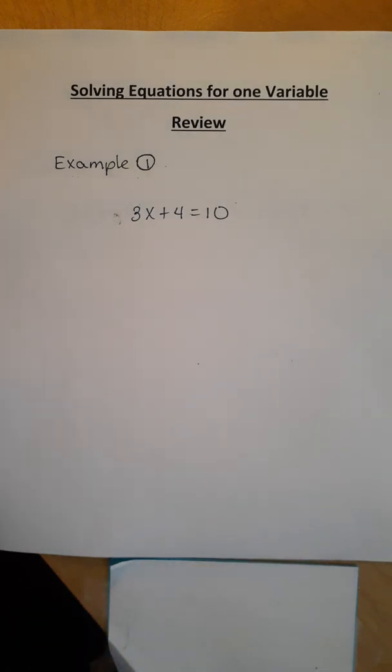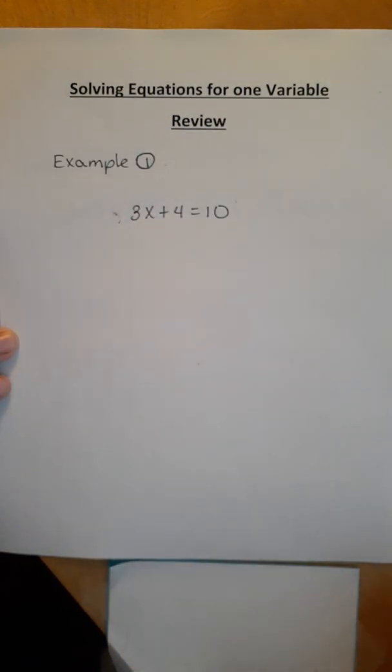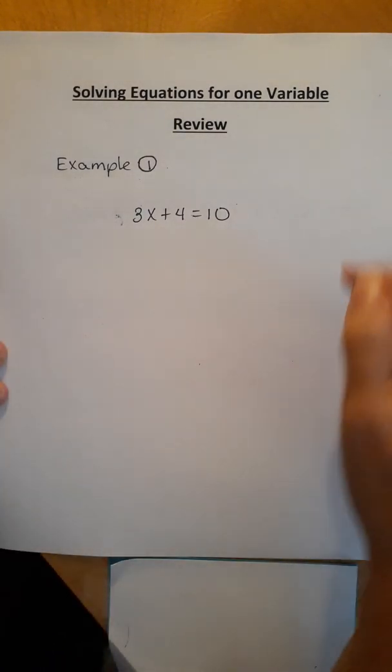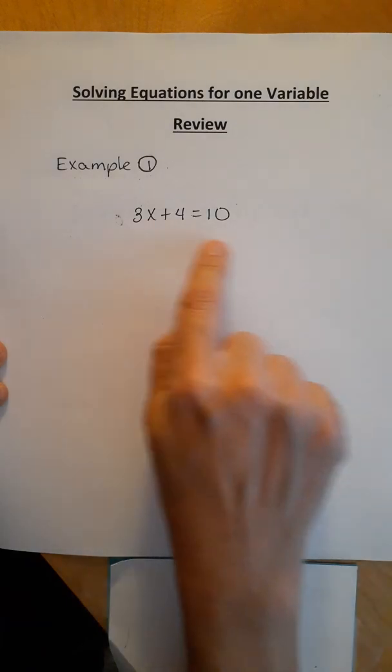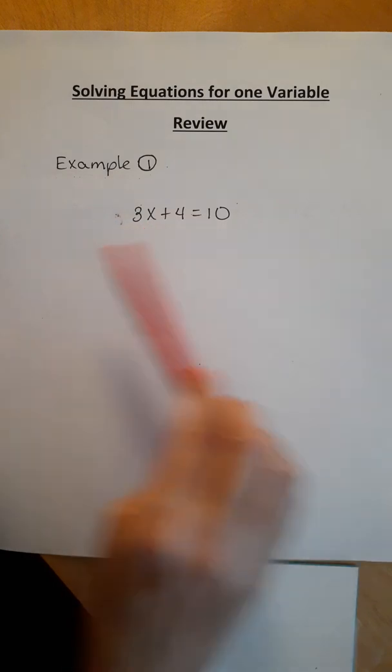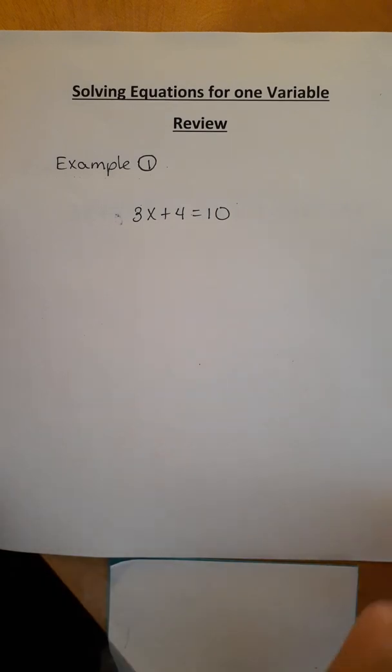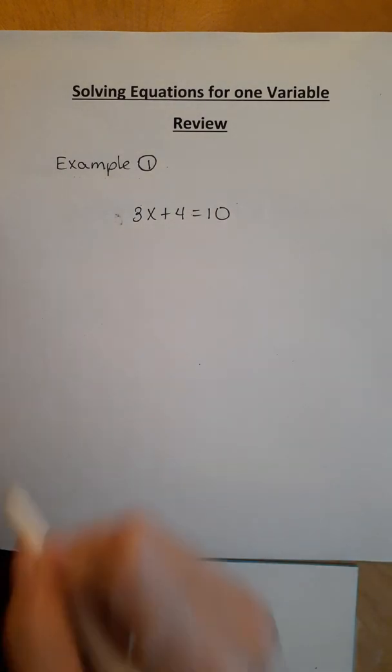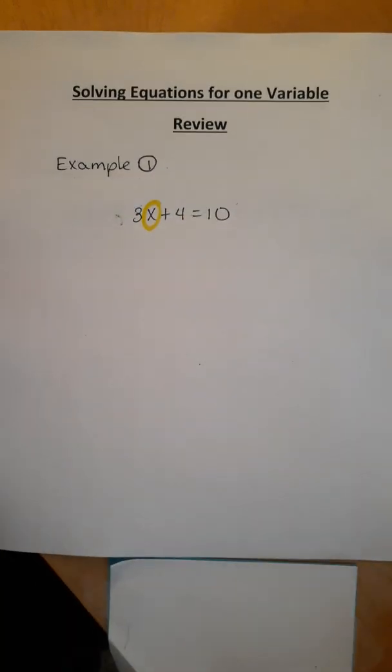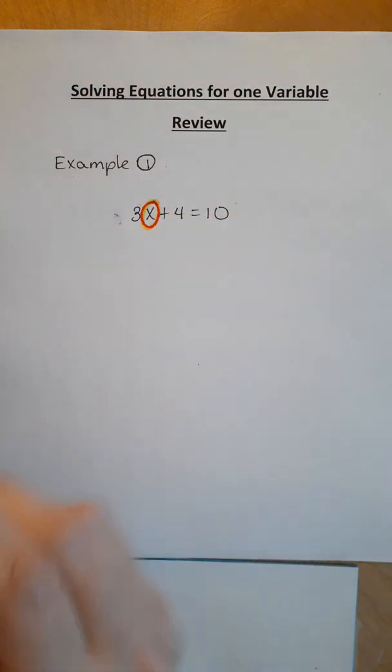This one is 3x plus 4 equals 10. Now what you have to remember is once you get this type of equation, you want to get this x alone. That's your goal. So I'm going to put a little circle around here to remind myself that I want that x alone.